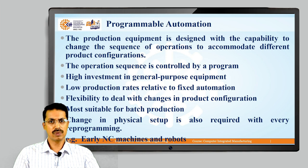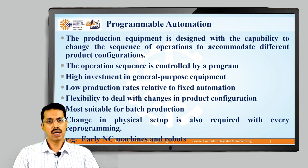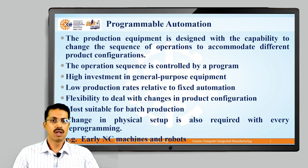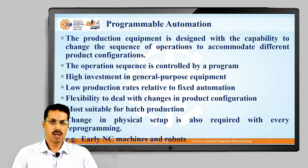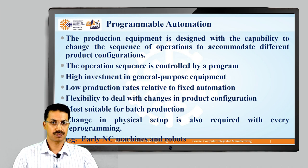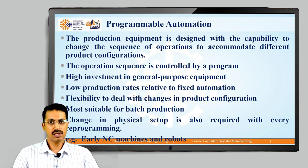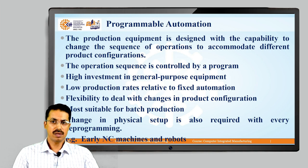If there is a change in the operation sequence or any product design, we change the program and feed a new program into the machine, and the new manufacturing process starts. The investment is in general purpose machines — unlike fixed automation which uses special purpose machines. It has a lower production rate relative to fixed automation, flexibility to deal with changes in product configurations, and is more suitable for batch production. Changes in physical setup are also required with every reprogramming. Examples include early NC machines and robots.